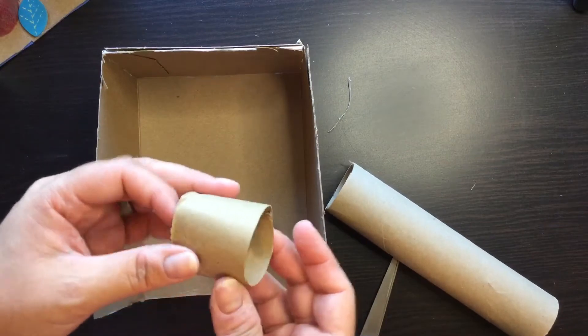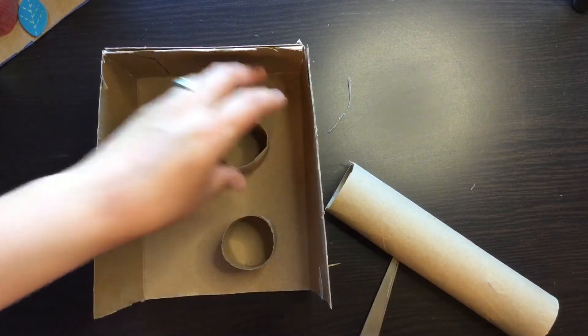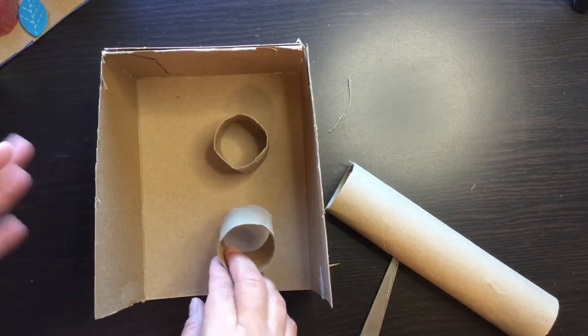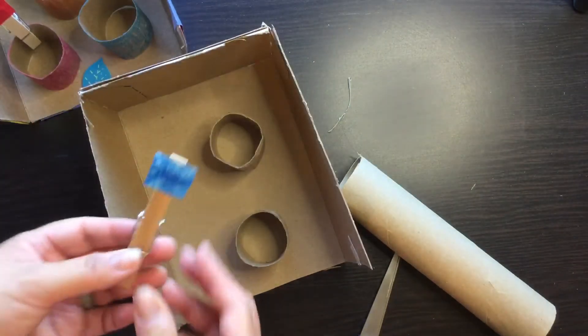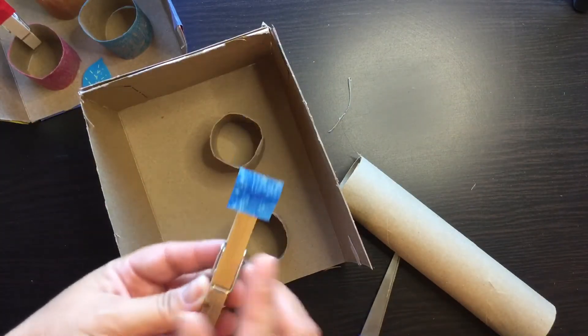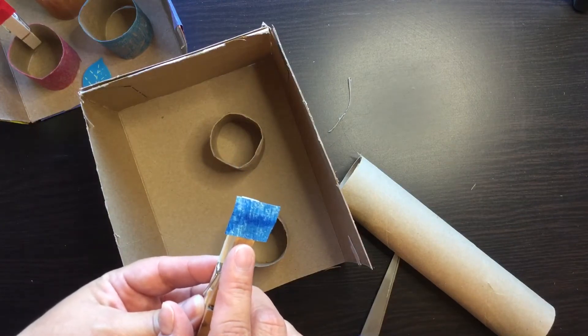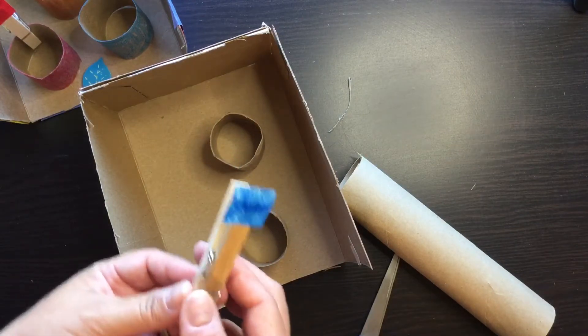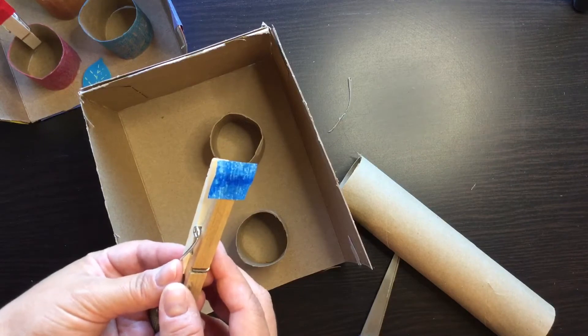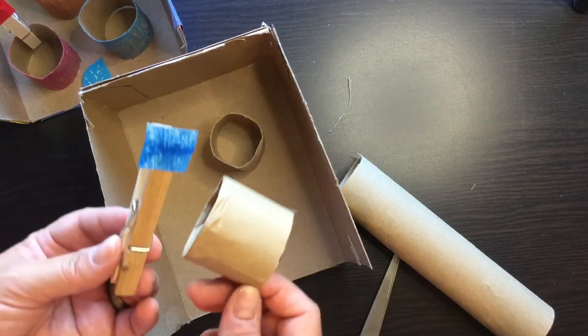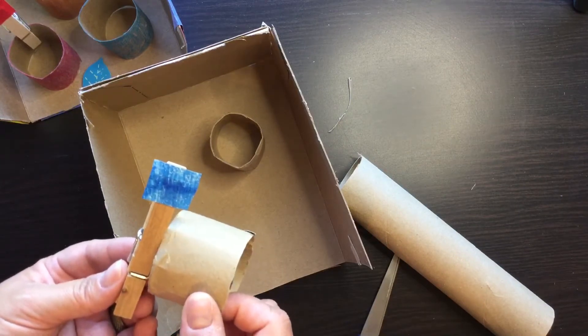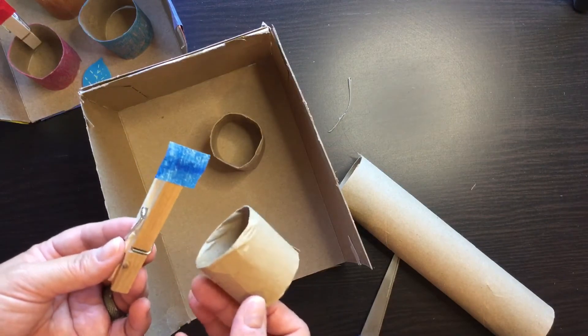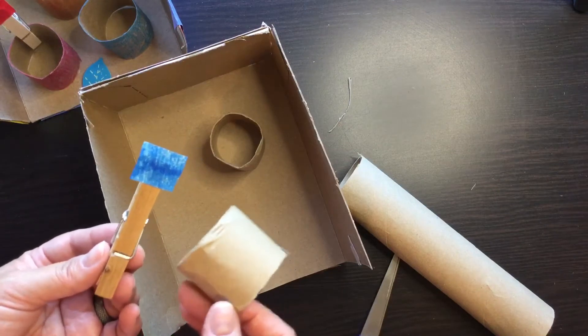Once you have that, you can start pasting them on here if you want, just like this. Or what I did was I actually used clothespins, and I used markers or crayons or whatever color. I did a sorting game based on color, so I colored the cylinder based on what I had here.